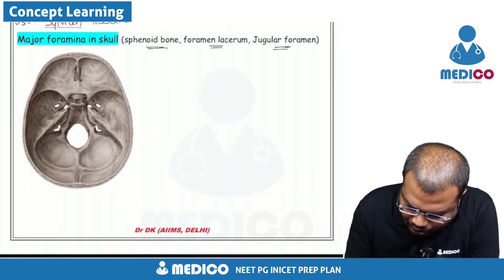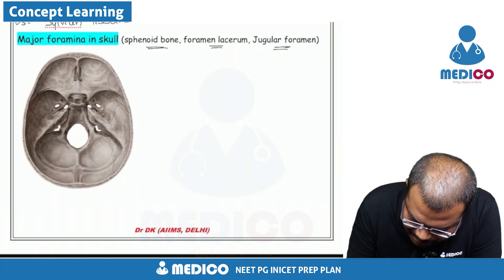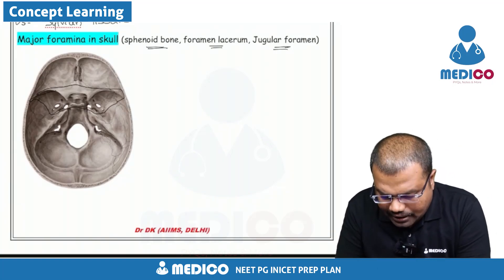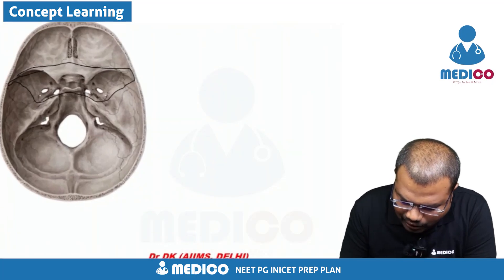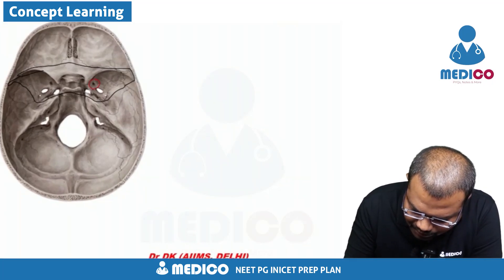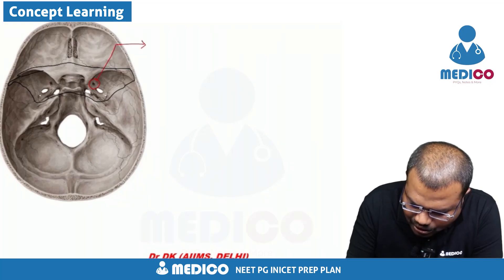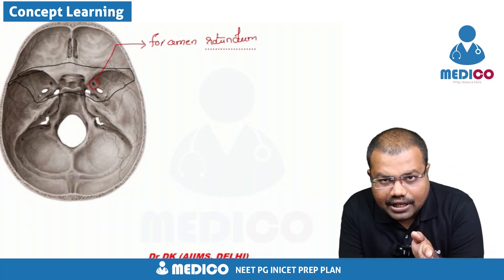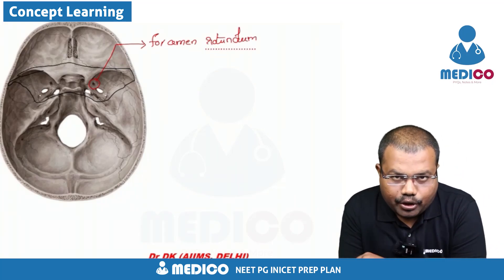First, let's look at the sphenoid bone. This entire part here is the sphenoid bone. Within the sphenoid bone, there are three foramina present in sequence. The first foramen is called foramen rotundum, and it is the first foramen present at the base of the skull in the sphenoid bone.